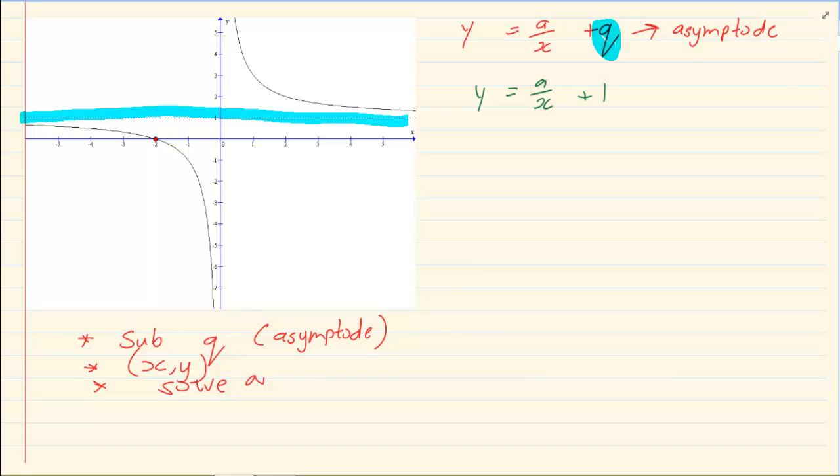Then we're going to substitute the point. Sometimes they're not going to clearly give it to you - you need to look for the point. In this case, it's (-2, 0).